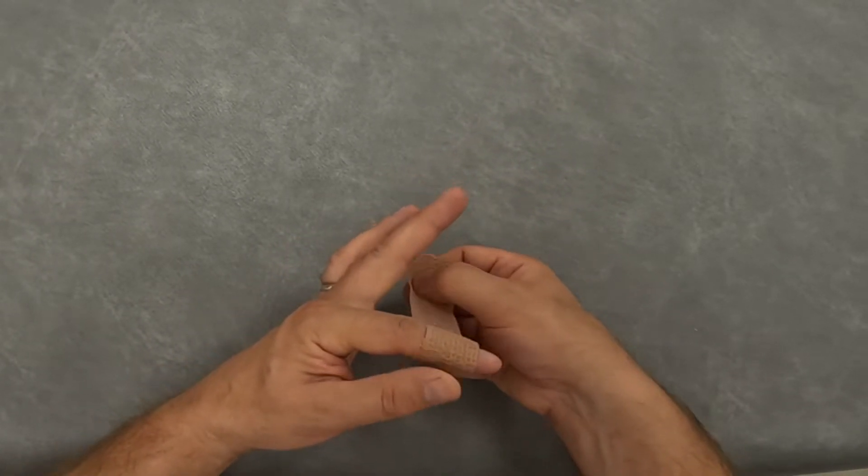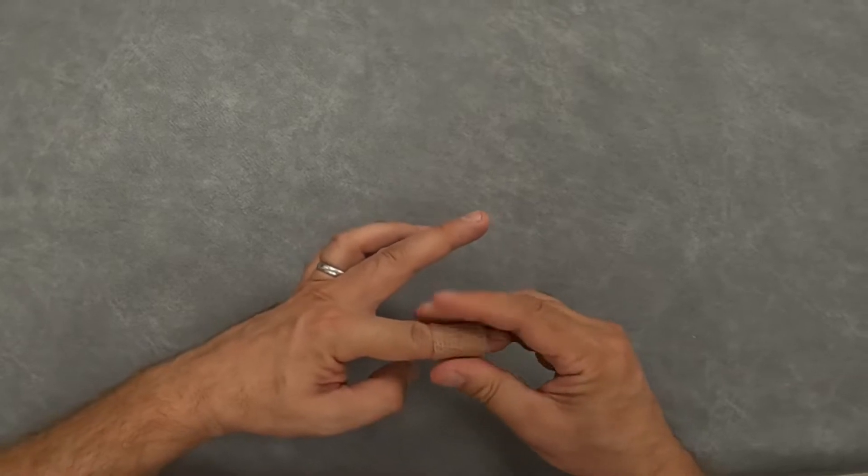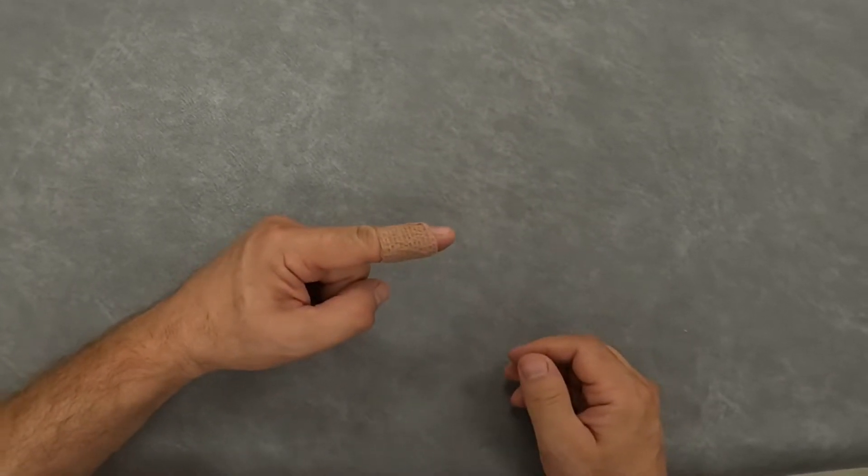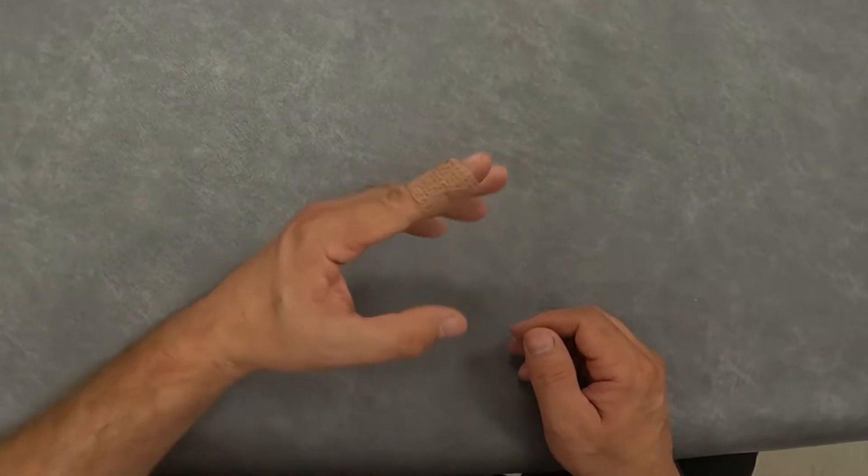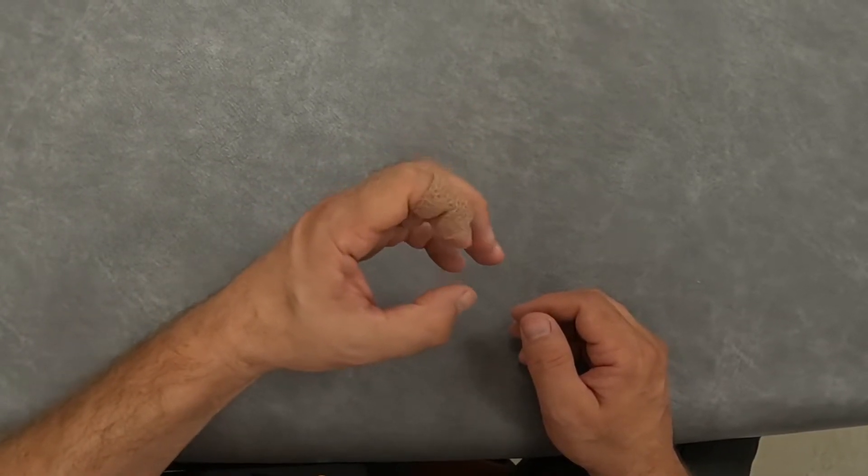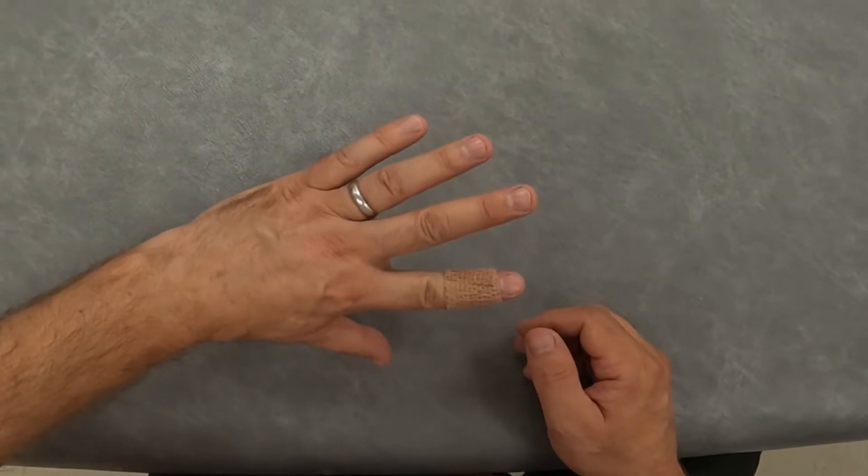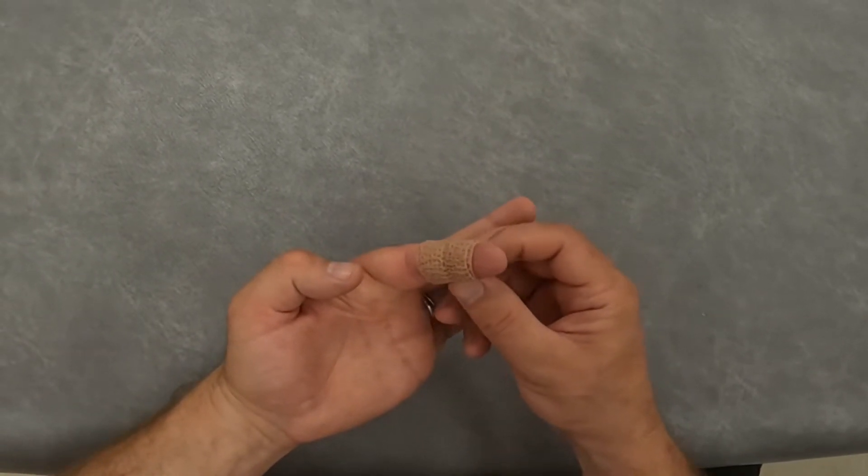It sticks to itself so there's no need for any sticky tape to keep it secure. Once on, you should be able to use your finger fairly normally. It just provides a bit of support and protects against those irritating knocks and bangs that can occur all too commonly when you've got a painful finger joint.